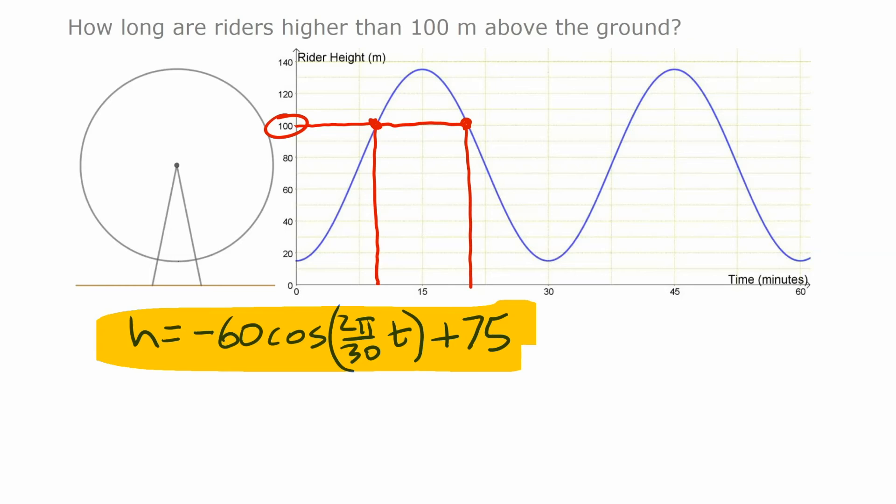Now in this case, we said riders usually only go around once, so we're going to ignore this part of the graph, and we're just going to say that the period of time that they're higher than 100 meters is the period in between those two times. That's where the heights are above 100. And so we need to determine those two times, and we can subtract them. Now I'm going to call the first one t1, call the second one t2, and then once we have those two times, we can subtract them.